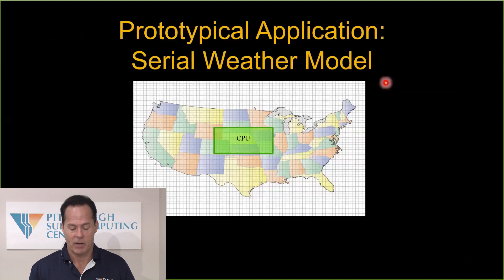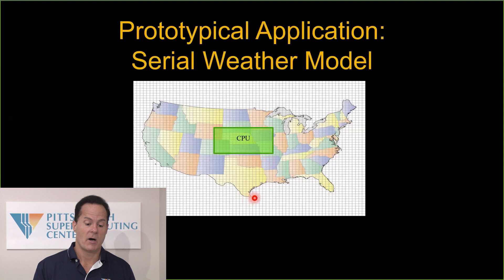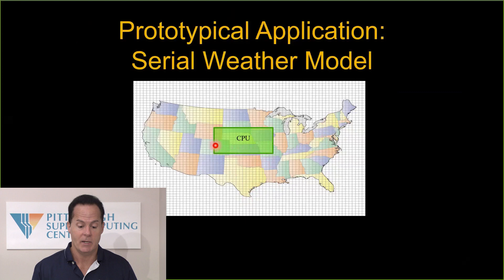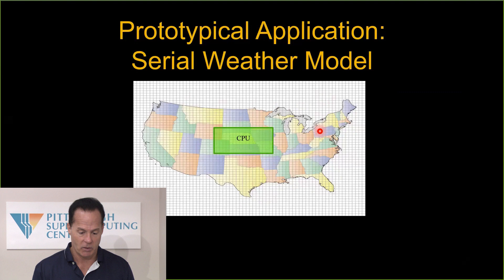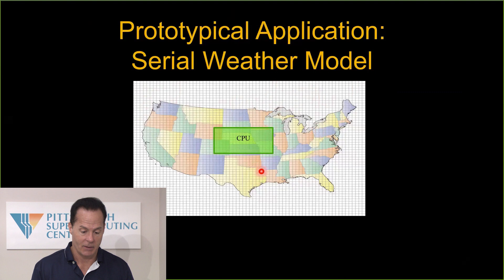Let's look at this from the perspective of a weather problem. I like weather because it's intuitive — everybody, no matter what background you're coming from, kind of gets the idea. If we wrote a weather model back in the 1970s on a serial computer, we would basically do the same thing you do with many scientific problems: break your weather map up into a grid. Each one of these mesh points on the grid would have wind velocities, temperatures, pressures, and the various things you want to use to compute your weather. Your CPU would go over this whole grid, update it for the next time step based on the way the wind is blowing. This would be a classic serial way to write this code.